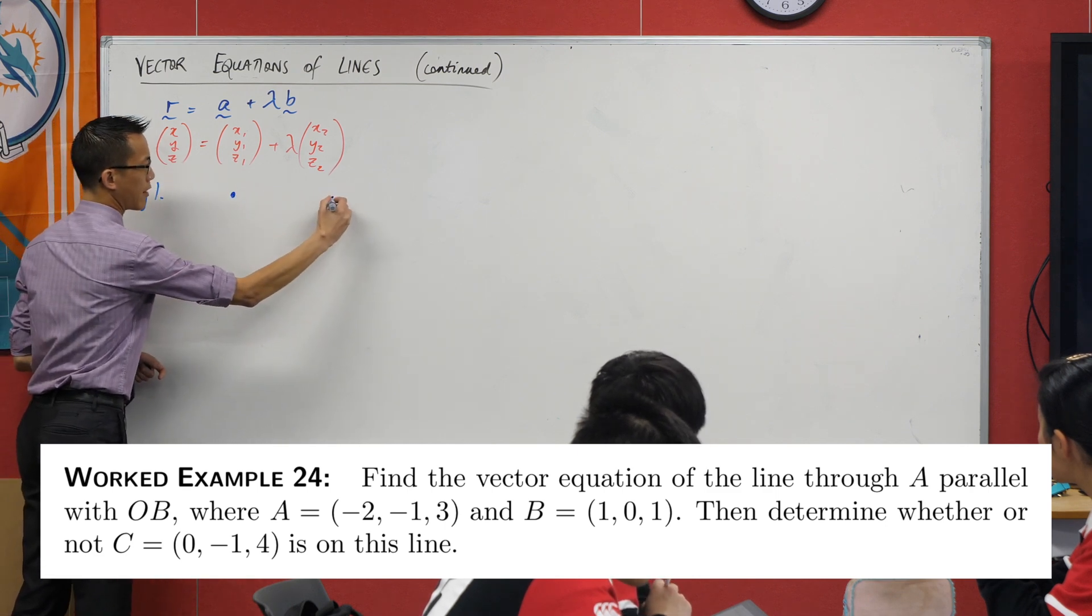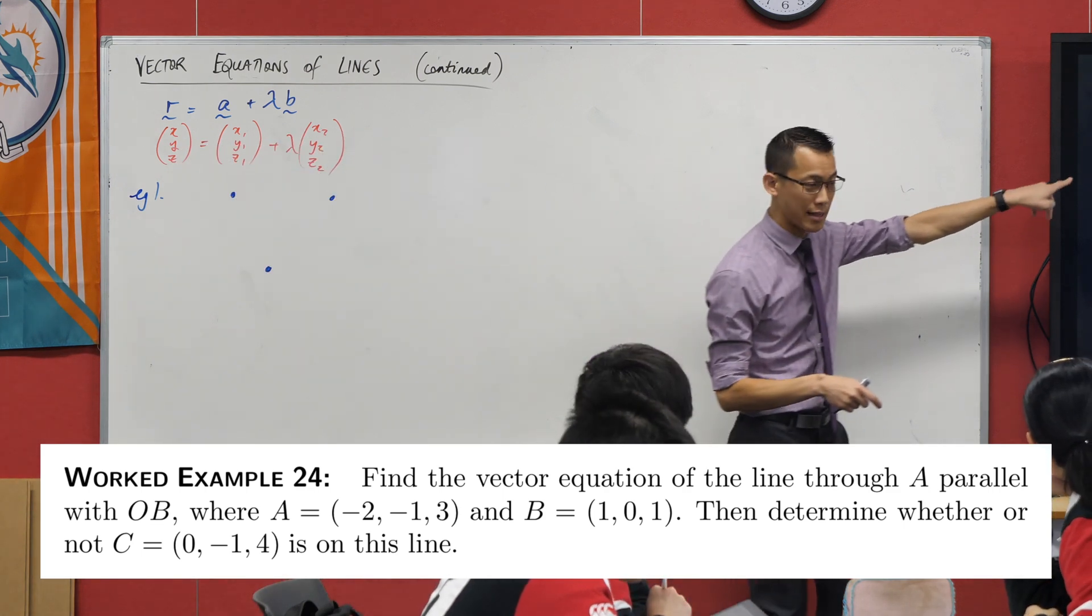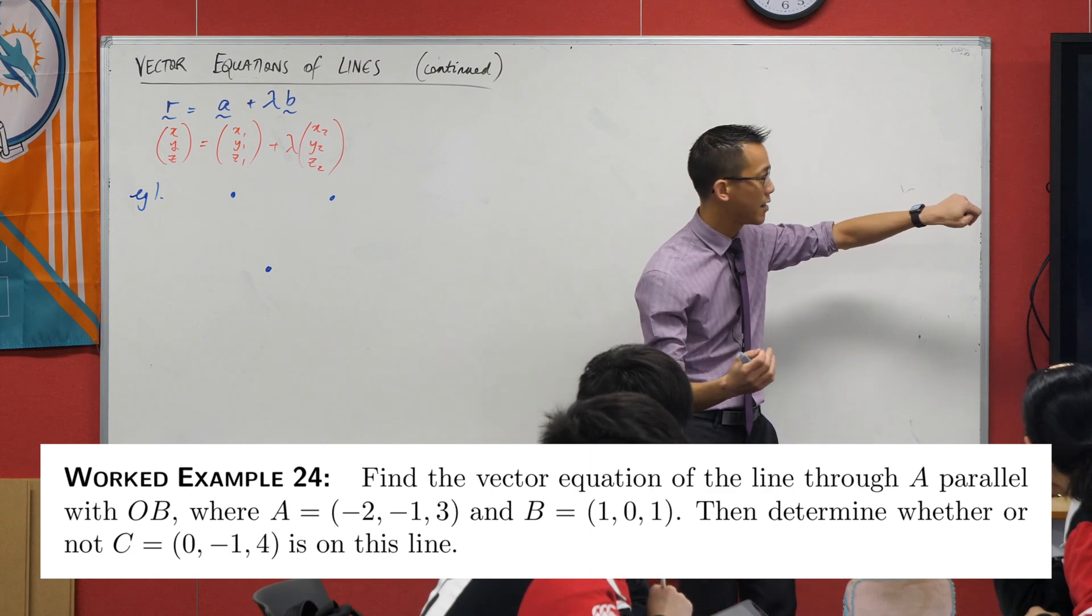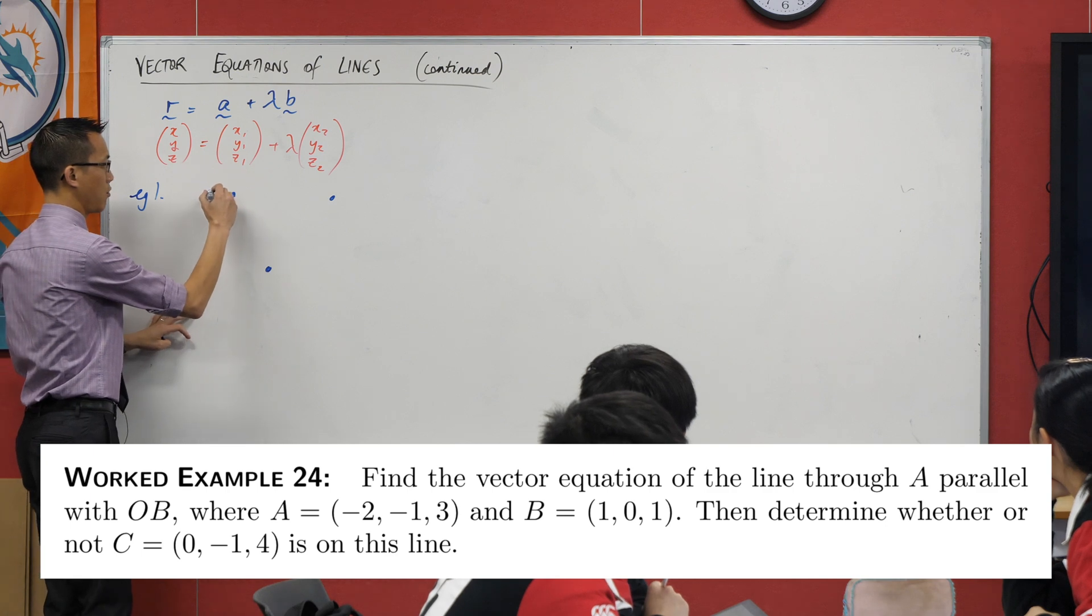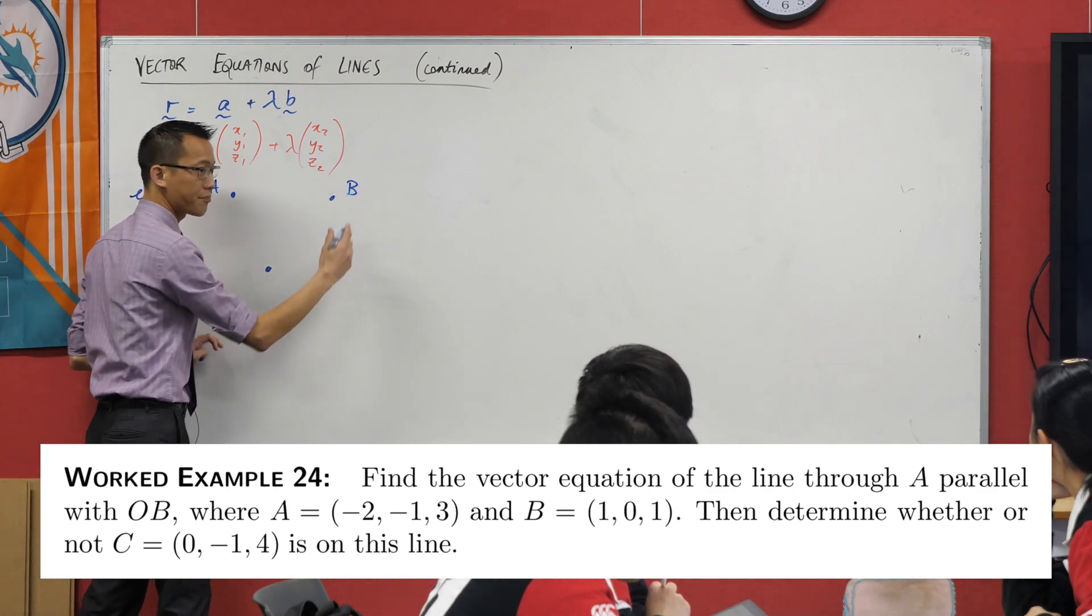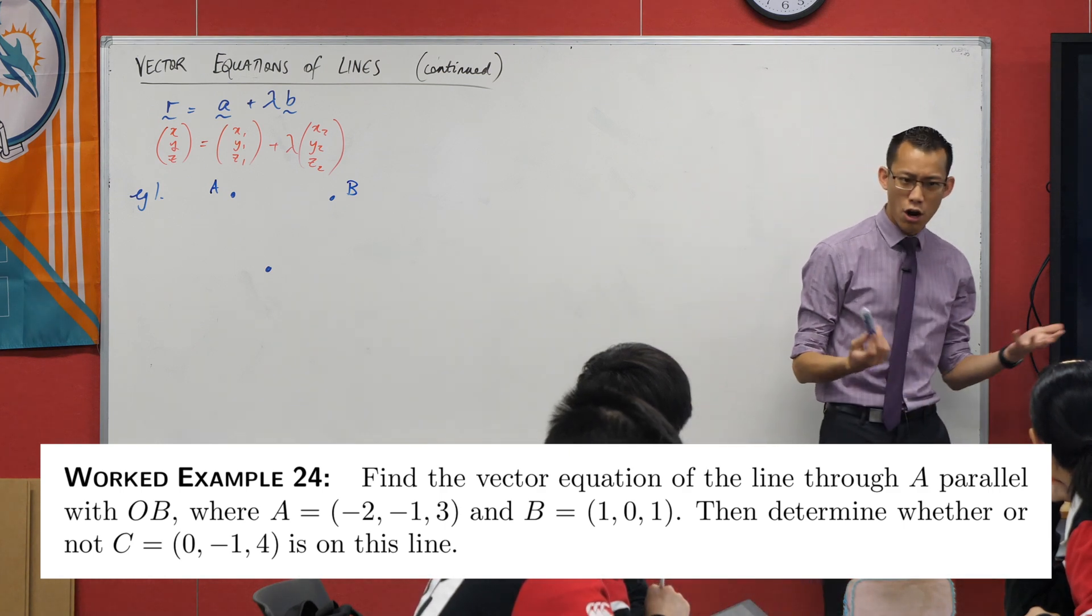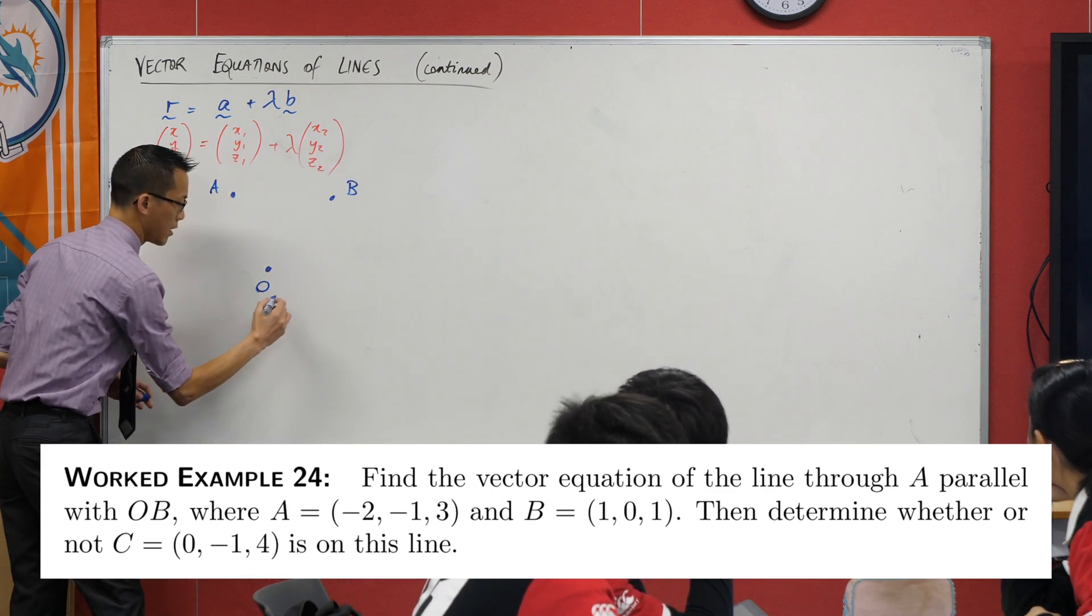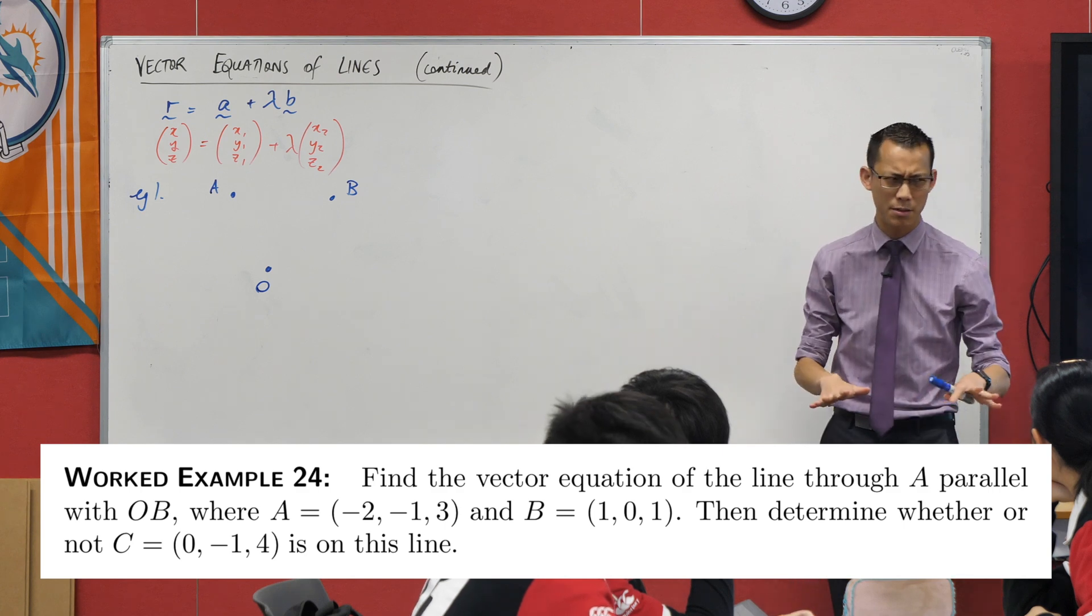Maybe you want to put a little diagram here for yourself. We've got three points we need to worry about. You've got the two ones that you're given coordinates of, so I'm just going to call this A and this B. And then what's the third point that's mentioned? Oh, the origin. So I've got A, B, with reference to O.